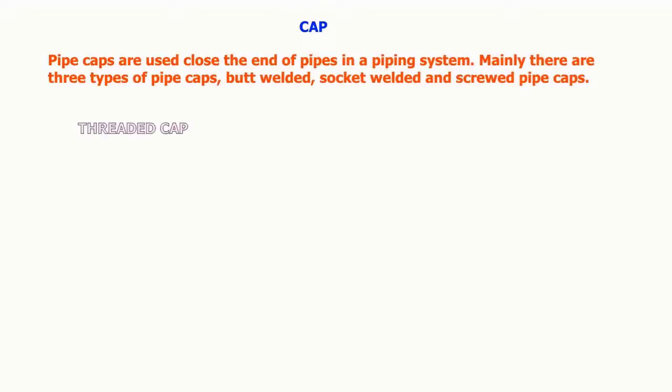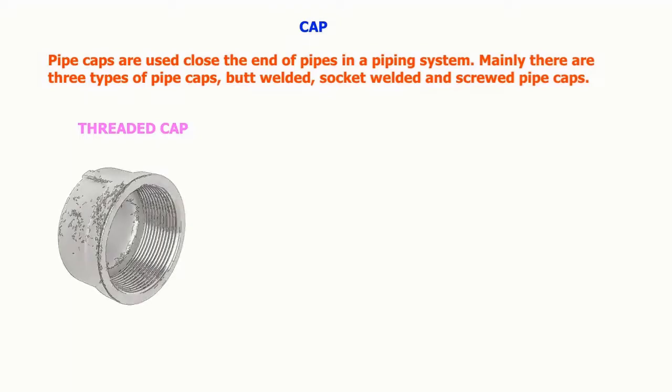Pipe caps are used to close the end of pipes in a piping system. Mainly there are three types of pipe caps: butt welded, socket welded, and screwed pipe caps.